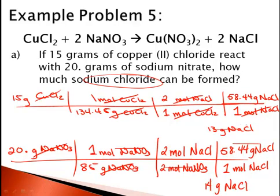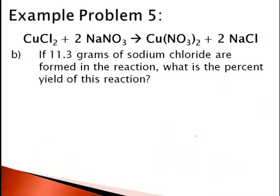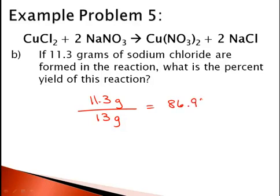This tells me I can only make 13 grams of NaCl — I'm limited by my copper II chloride. This makes 13 grams of NaCl my theoretical yield. So for Part B, if 11.3 grams of NaCl were actually made and I should have been able to make 13 grams, then 11.3 divided by 13 gives a percent yield of 86.9%.